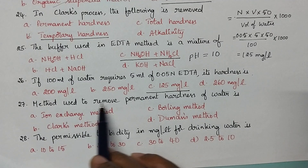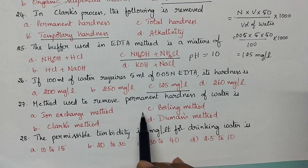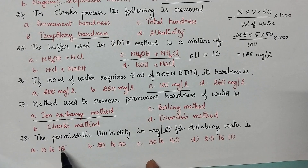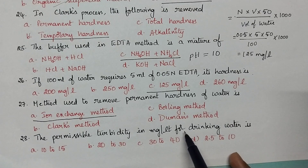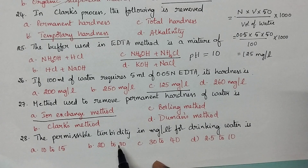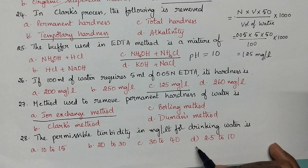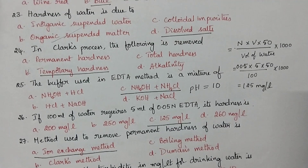Permanent hardness of water can be removed using the ion exchange method. The permissible turbidity for drinking water is up to 10 ppm or 10 mg per litre, so the acceptable range is 2.5 to 10 mg per litre.